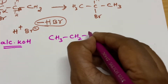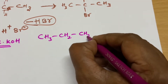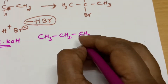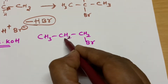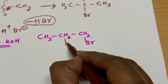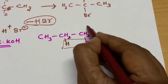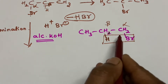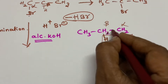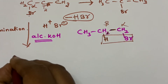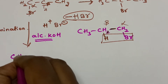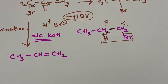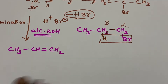So this is your CH3-CH2-CH2Br. To make it clear, one of the beta hydrogens is highlighted — we have to remove it. There is only one beta hydrogen here. When you add alcoholic KOH, the H and Br are removed; the single bond becomes a double bond and you get the product CH3-CH=CH2.